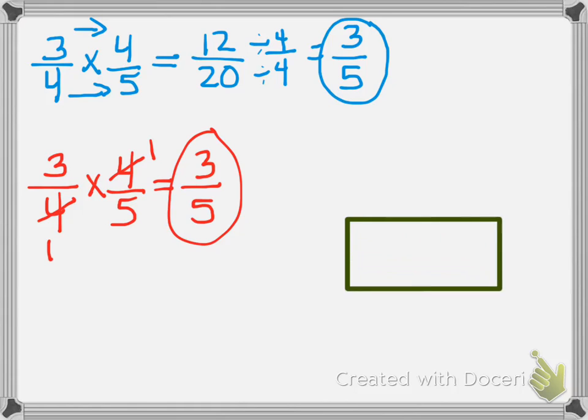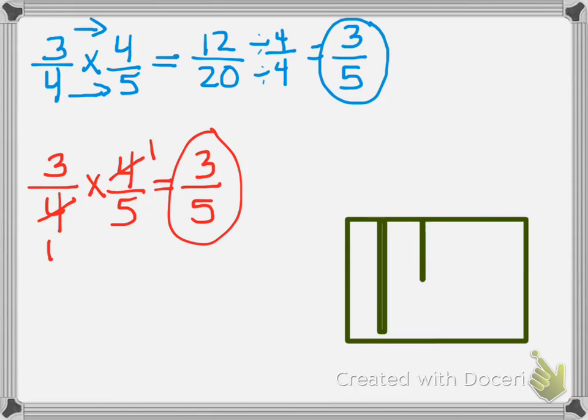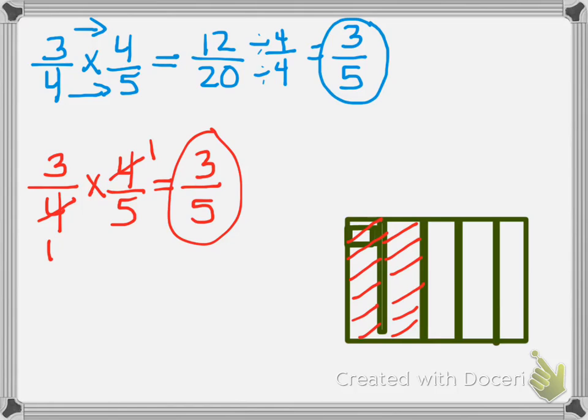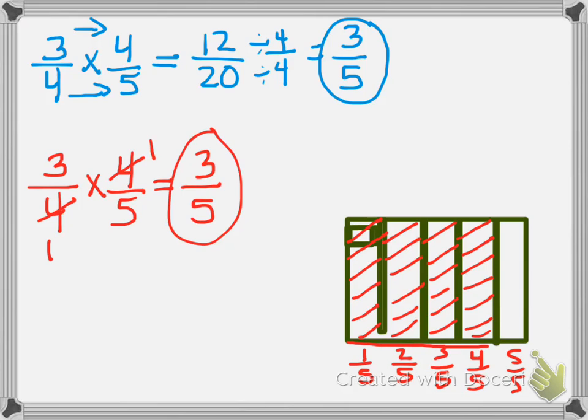Now let's try the area model. Let's try the model and make sure you understand this. 3 fourths times 4 fifths. So first I'm going to partition my box into fifths. And I need to shade in 4 fifths, 1, 2, 3 fifths, 4 fifths. So that would be 1 fifth, 2 fifths, 3 fifths, 4 fifths, and 5 fifths. So you can see I shaded in 4 fifths. Now I'm going to partition my box horizontally into fourths. And I'm getting these numbers using the denominator. So let's partition it into fourths.